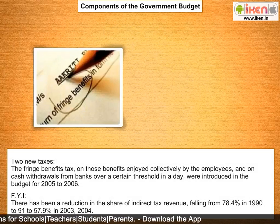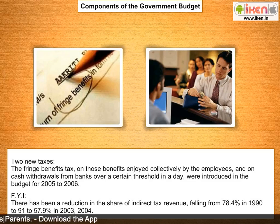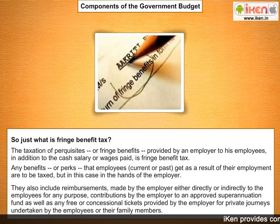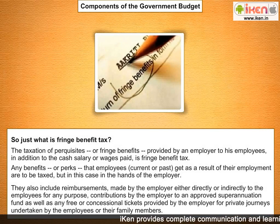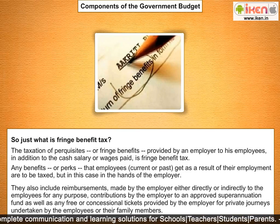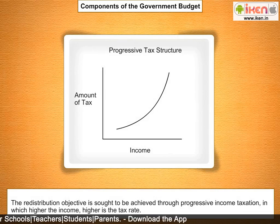Two new taxes — the fringe benefits tax and a tax on cash withdrawals from banks over a certain threshold in a day — were introduced in the budget for 2005–2006. Fringe benefit tax is the taxation of perquisites or fringe benefits provided by an employer to employees in addition to cash salary or wages. The redistribution objective of the government is sought to be achieved through progressive income taxation, in which the higher the income, the higher the tax rate.